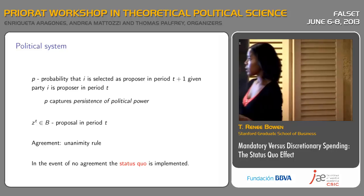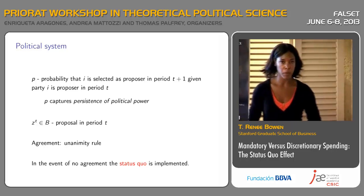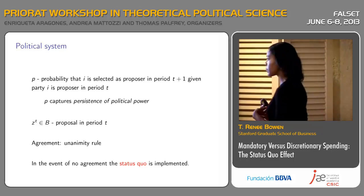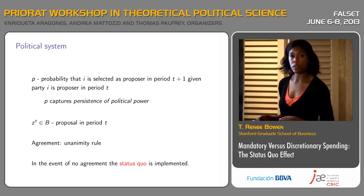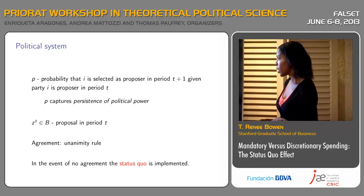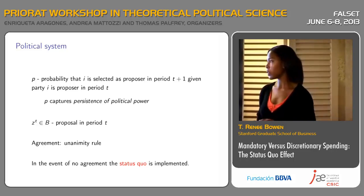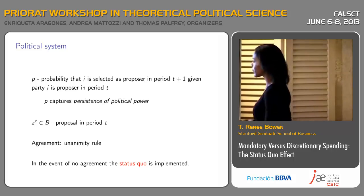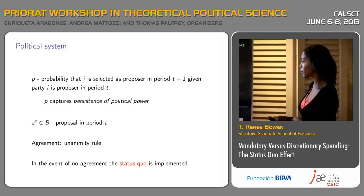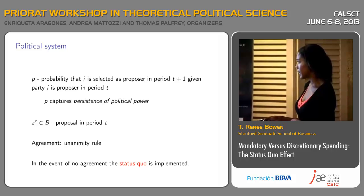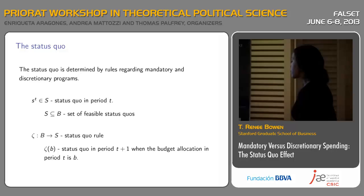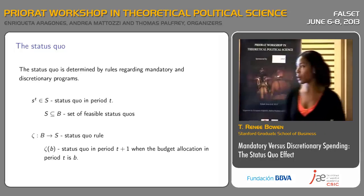In our political system, P is the probability that party I is selected as proposer in period T+1, so the probability of being selected as proposer is Markovian and depends on the previous period's proposal. P thus captures the persistence of political power. We call ZT the proposal in period T. We're going to have agreement by unanimity rule. In the event of no agreement, the status quo is implemented, and it's the status quo that is the focus of the study.